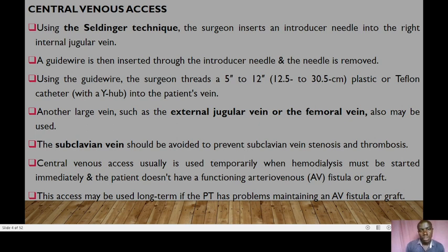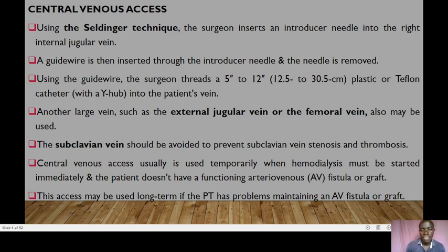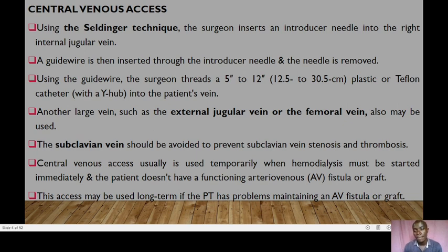A guide wire is inserted through the introducer needle and the needle is removed. Using this guide wire, the surgeon threads a plastic or tunneled catheter of about 12.5 to 30.5 centimeters into the patient's vein. Another large vein such as the external jugular or femoral vein could be used. The subclavian vein should be avoided to prevent subclavian vein stenosis and thrombosis. Central venous access is usually used temporarily when hemodialysis must be started immediately or when the patient does not have a functional AV fistula or graft, though it may also be used long-term if the patient has problems maintaining an AV fistula or graft.